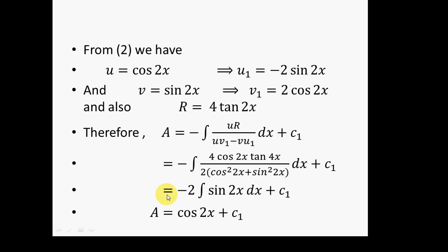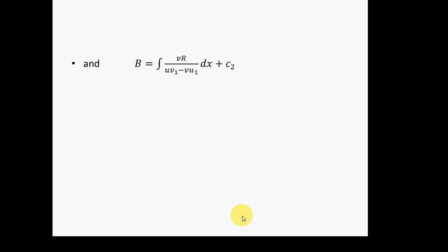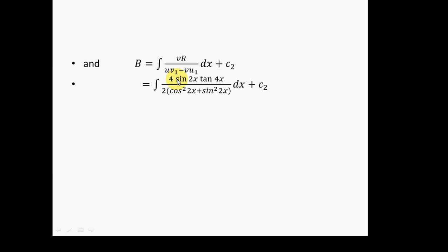Similarly, the value of B is given by B = ∫[vR / (uv' − vu')] dx + constant. Substituting all values, the integrand becomes sin²(2x)/cos(2x), which simplifies further using the identity sin²θ = 1 − cos²θ.